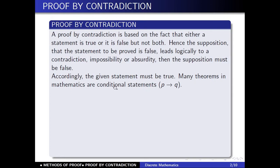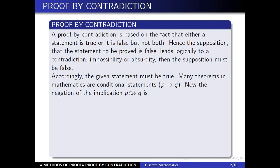Many theorems in mathematics involve a conditional statement P implies Q. The negation of the implication P implies Q — as discussed in an earlier lecture — is equal to P and negation Q, which can be easily verified by a truth table.